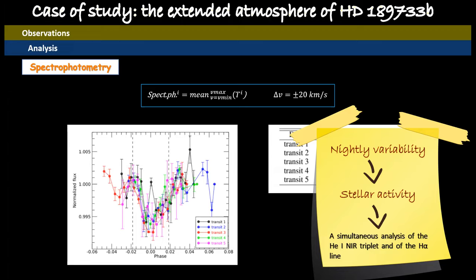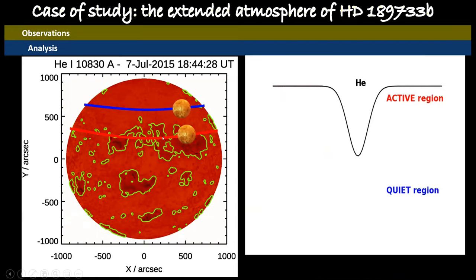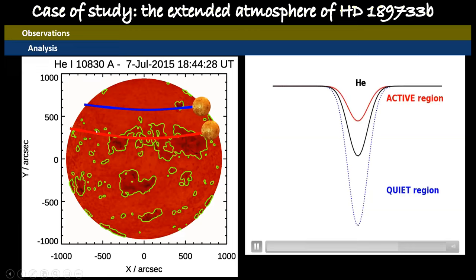So we have exploited all the range of GIARPS. Indeed, if we look at the sun in the helium channel, if we have transits over a quiescent region, we would have an excess in-transit absorption at the position of the helium line. If the planet transits over an active region, we have the opposite behavior because we have a minor absorption at the position of the helium line.